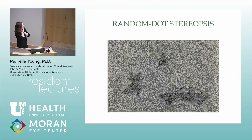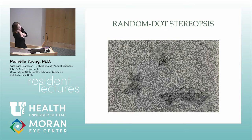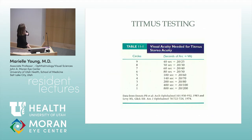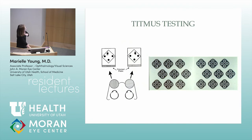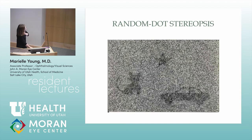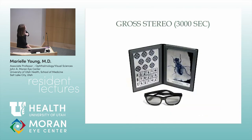In peds clinics we sometimes use stereo tests where you don't have to put the glasses on — this is called the Lang stereotest, and it has pictures. It's harder to see without the glasses, but you can kind of fake the first few. It doesn't test the same degree of acuity of stereopsis, but in kids you're often just looking for gross stereopsis anyway.